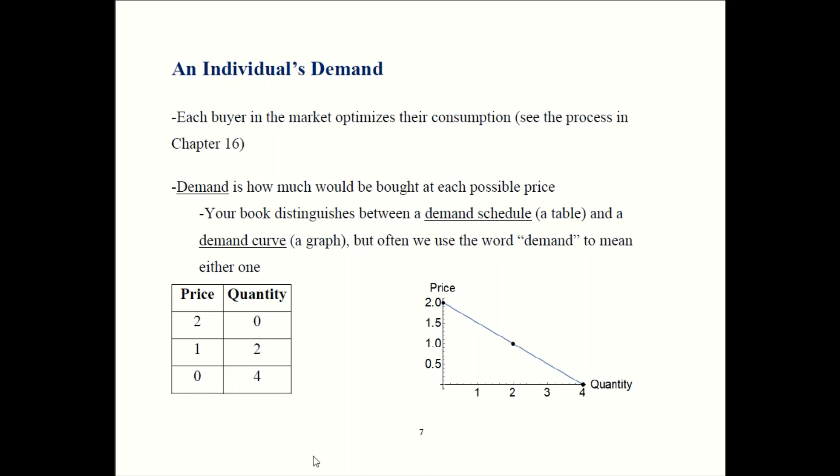So you could graph that as well. Here's price of two, quantity of zero. Here's price of one, quantity of two, that corresponds to this point. Price of zero, quantity of four, that's this point in the graph. You just join those three points with a line, and there is your demand curve.